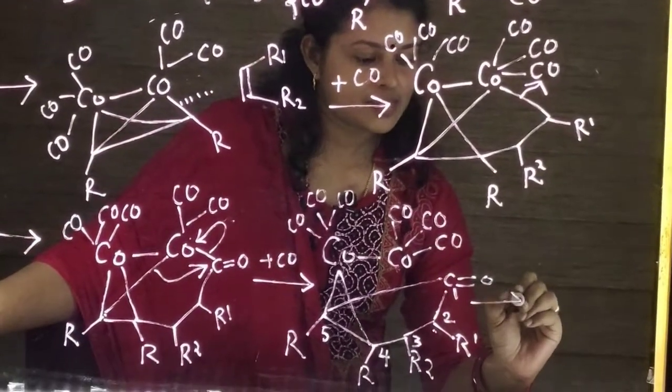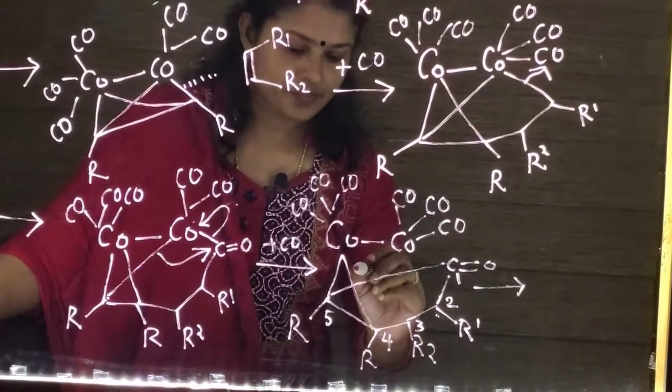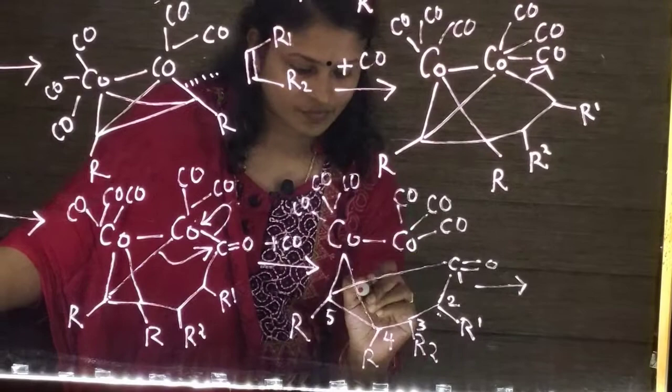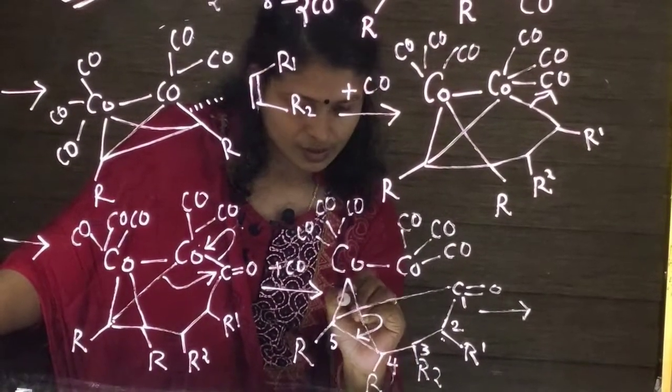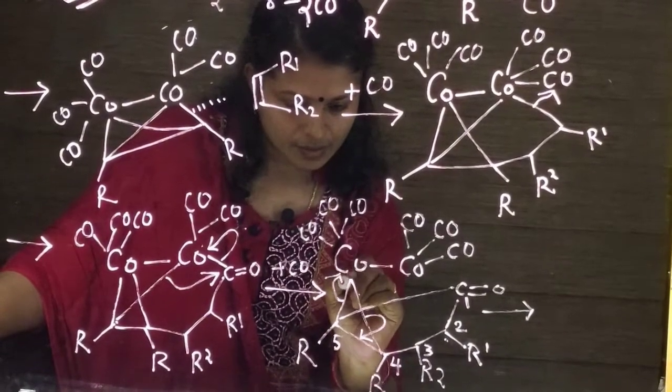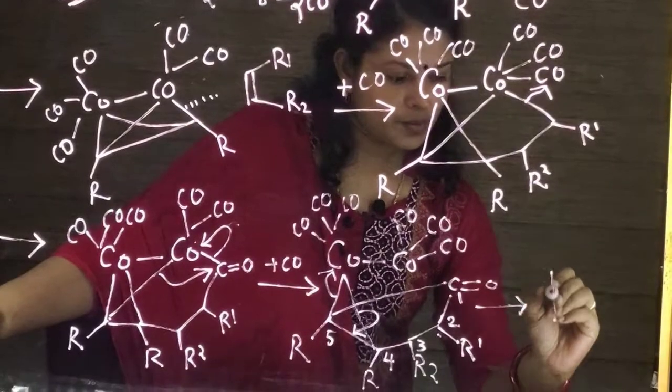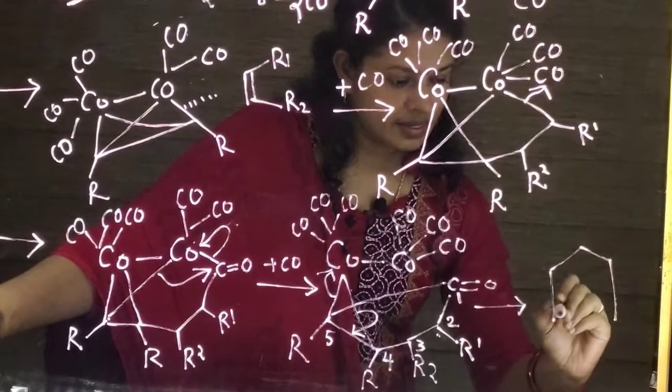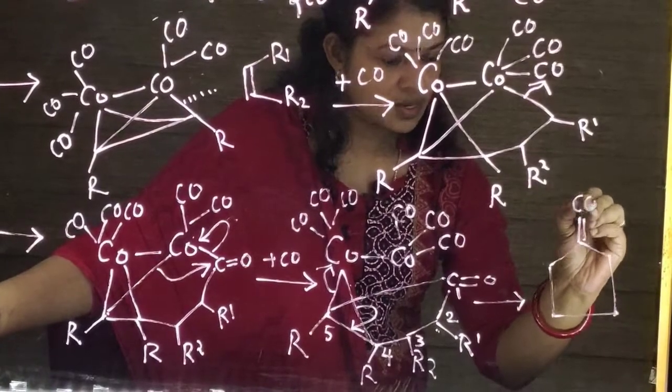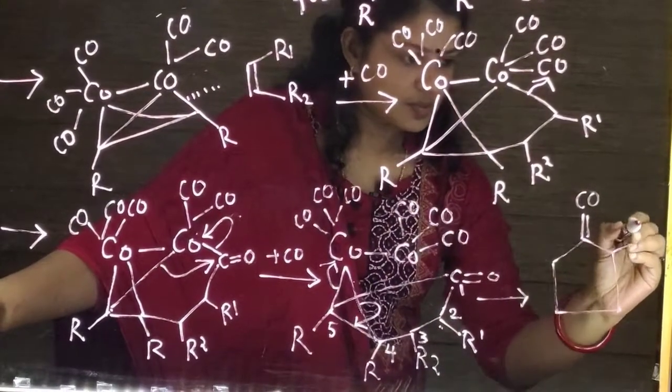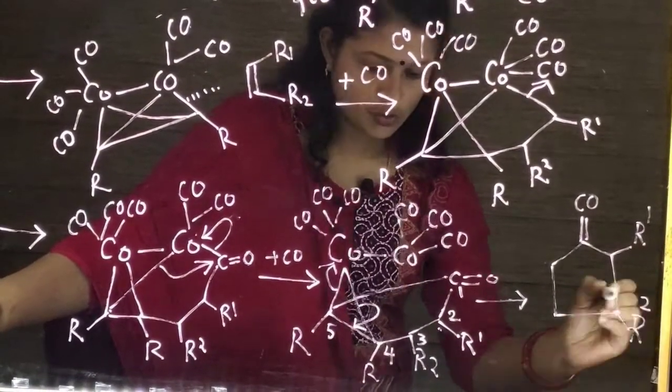The last step, again, reductive elimination takes place. Finally, we obtain a five member ring in which the first carbon contains the carbonyl group. The second carbon contains R1, the third carbon, it is R2,